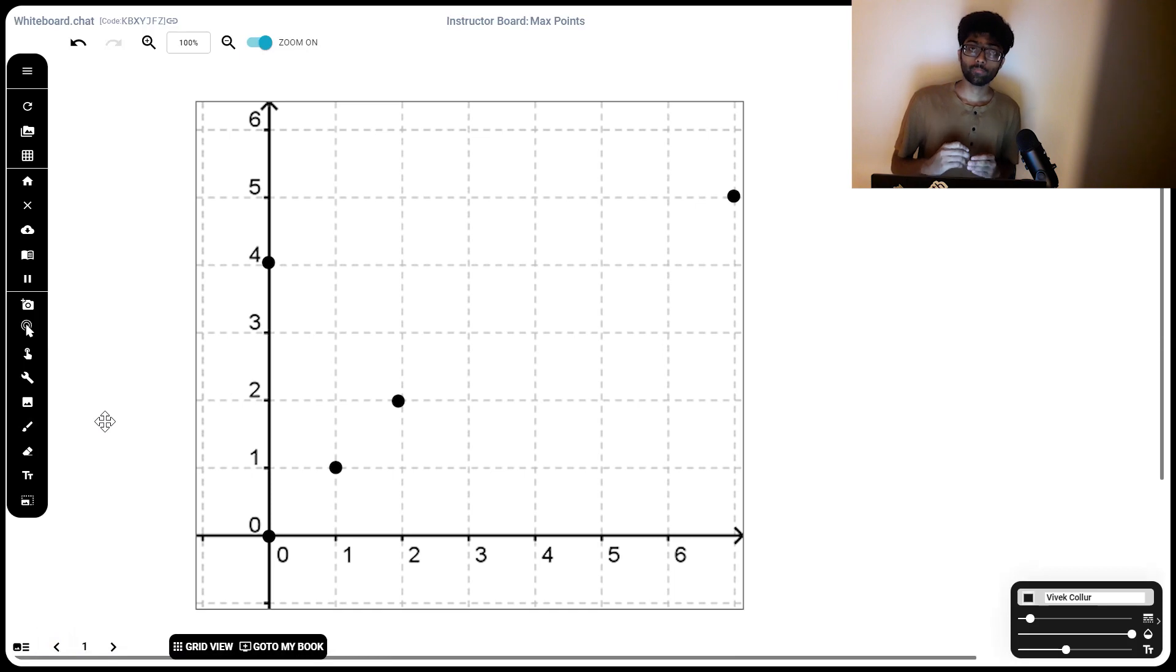So, initially, we start with the first point and we compute every possible line. That is, with point one and two, one and three, one and four, and one and five. Here, straight away, we can see that one, two and three lie on the same line.